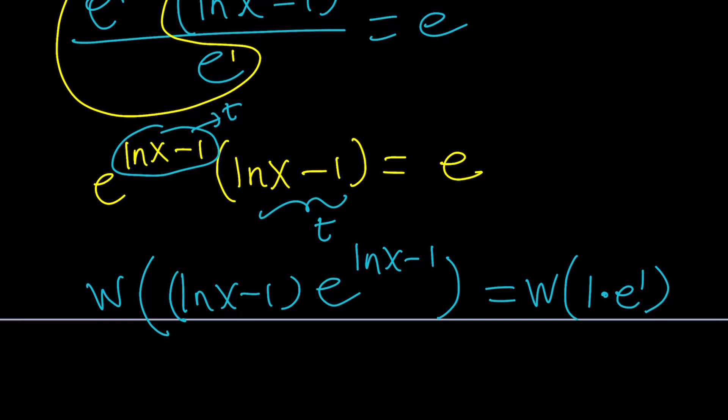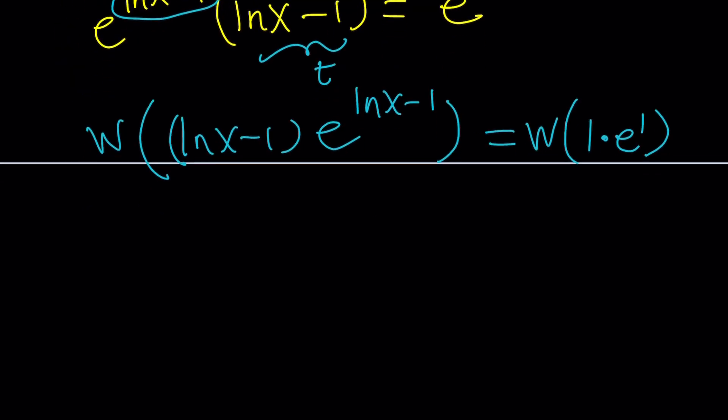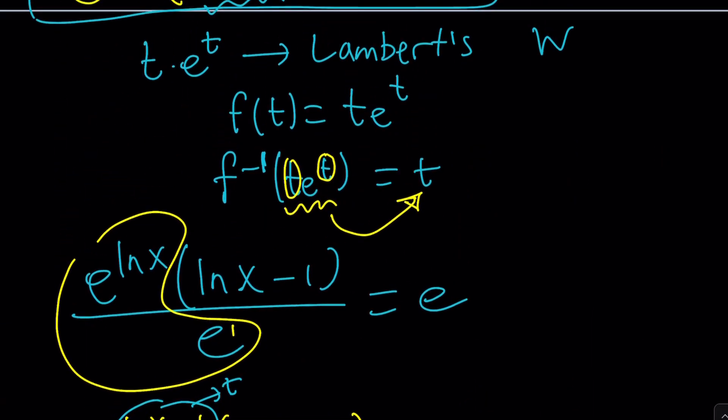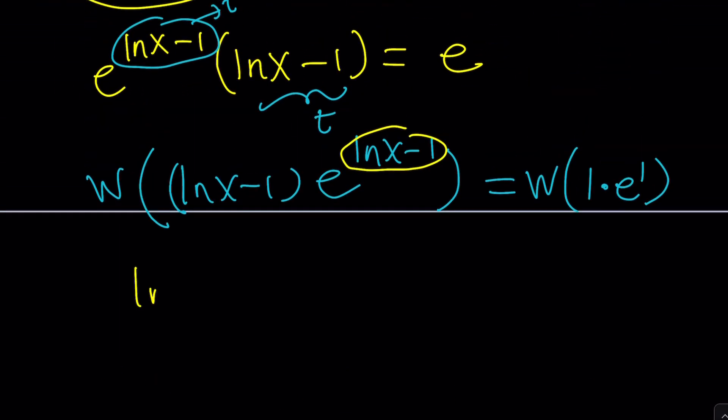Now when you apply Lambert on something like this, from the left-hand side, you're going to get this expression. Remember the extraction of T from T e to the T? We're doing the exact same thing with ln x minus 1. So this is ln x minus 1. And this one is just 1. Piece of cake. And then you can add 1 to both sides. You're allowed to do it. The rest is basic algebra.